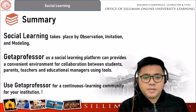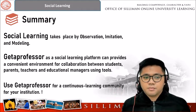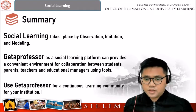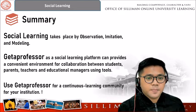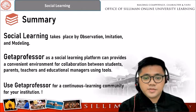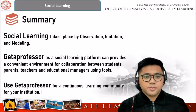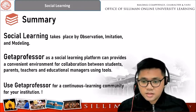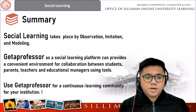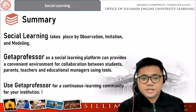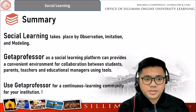Social learning takes place by three things, as mentioned in the previous presentation: observing, imitation, and modeling. Observing means we observe people's behavior. Imitation means following the observation, we assimilate and imitate the observed behavior of that particular person. Modeling means we are more likely to imitate behavior modeled by people we perceive as similar to ourselves.